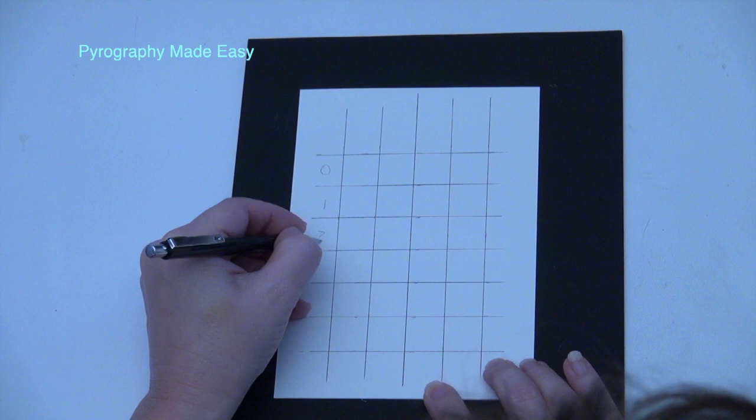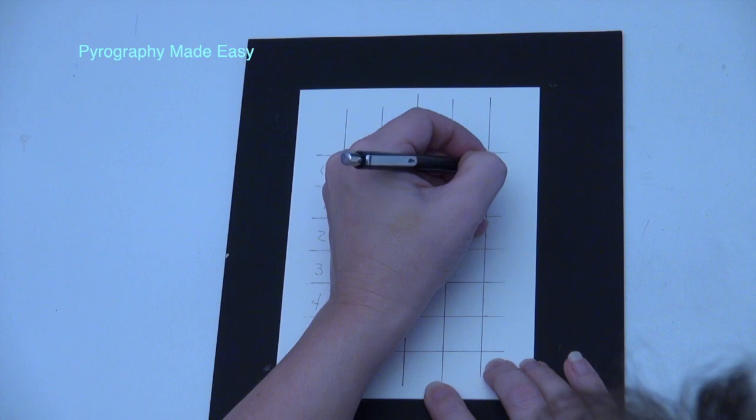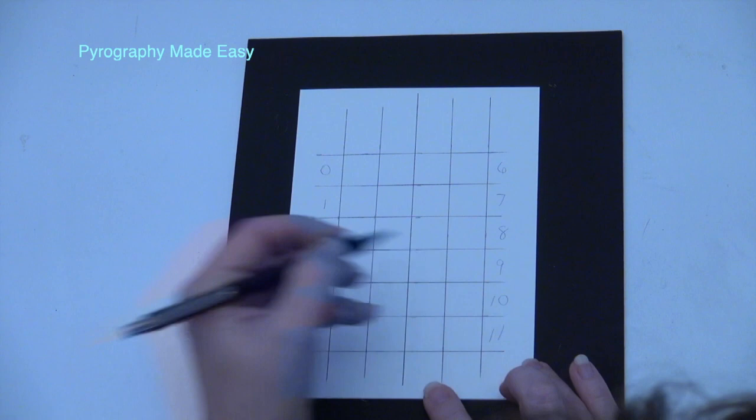After your grid is done assign numbers next to the squares. Yes, I left out a line on my grid and I did fix it after I numbered them. Listen, I never claimed to be a rocket scientist.